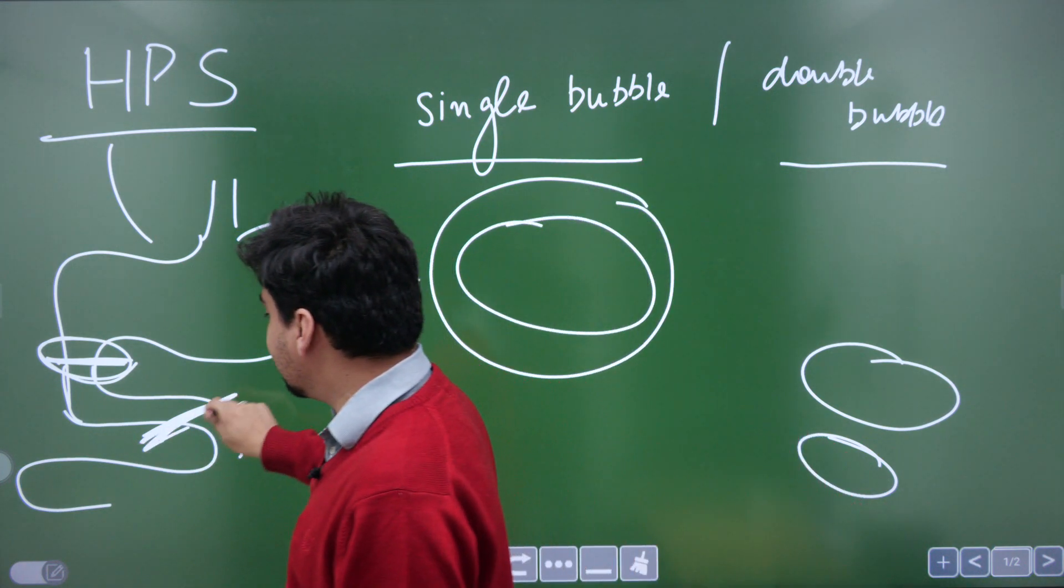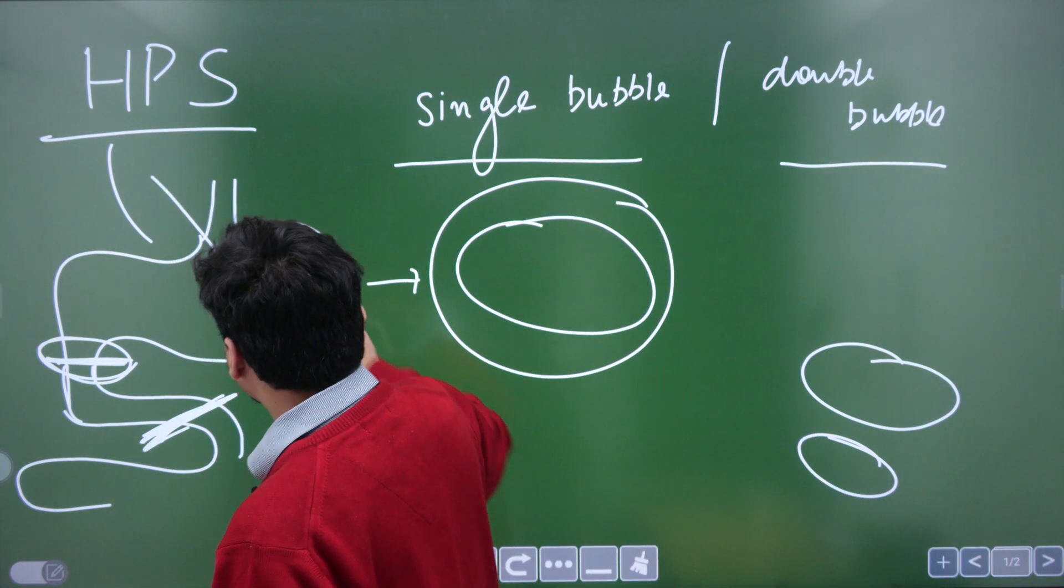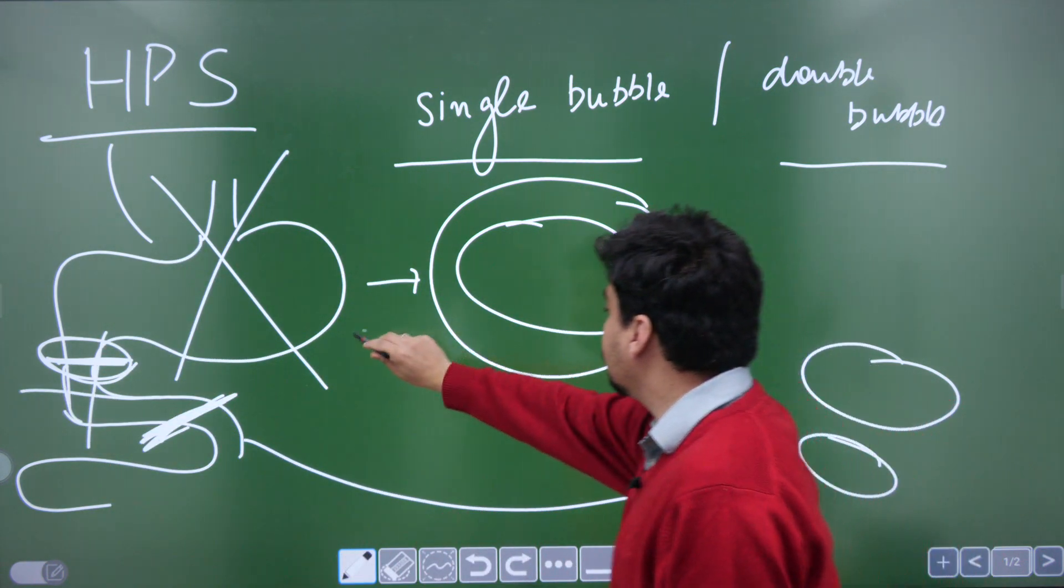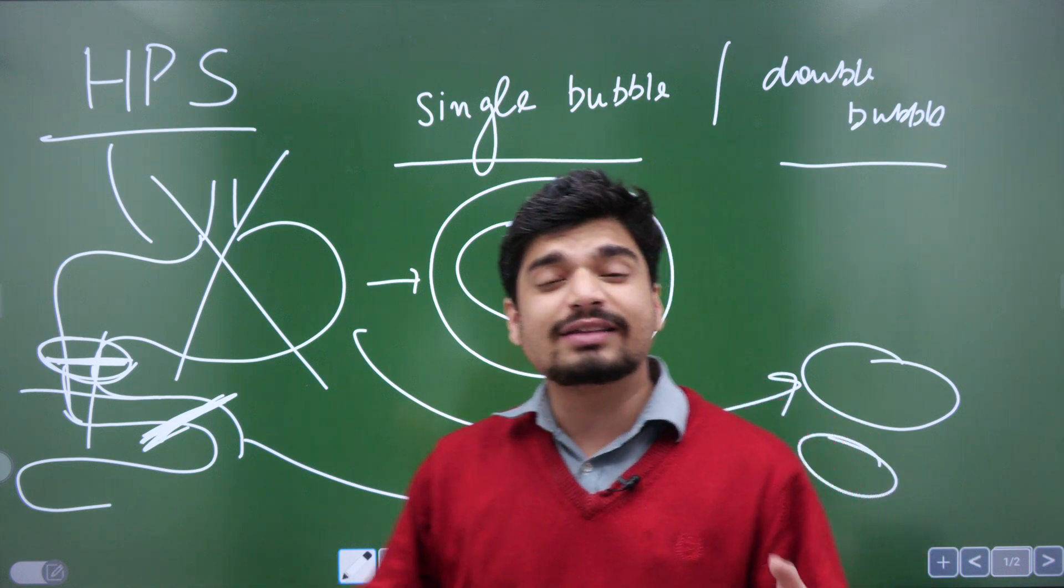When there is duodenal atresia, then one bubble over here and one bubble over here. These two bubbles will be visible. So in duodenal atresia, you have what is known as the double bubble sign.